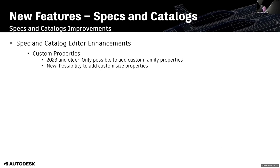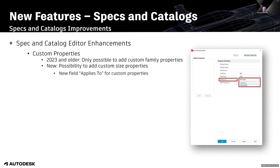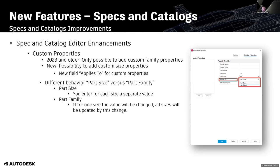Regarding custom properties: formerly it was only possible to add custom family properties, but it was not possible to add custom size properties. This has now changed. This is done via a new field in the custom property dialog called 'applies to' — a selection list with two options: part size and part family. Part size properties will be added to the size tab of your catalog editor, and part family properties will be added to the general properties tab.